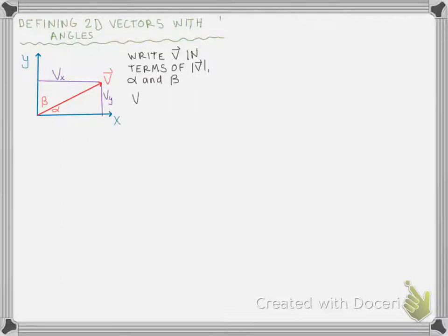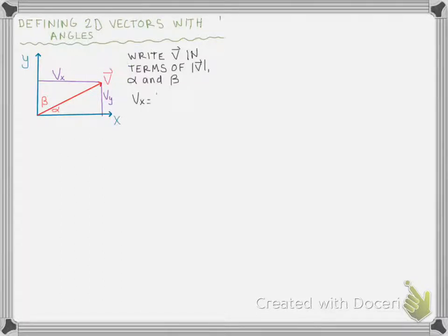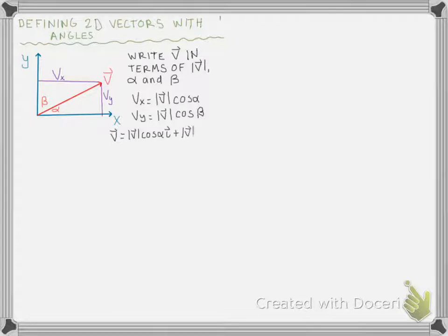What I'm going to be doing is determining vx and vy, which I've shown here in purple. So I'm going to find the magnitude of this line, its x component, and its y component. I can do that by determining vx is equal to the magnitude times the cosine of alpha, and vy is the magnitude of the vector times the cosine of beta. And I can write this in Cartesian vector form: v equals magnitude times cosine alpha times i plus magnitude times cosine beta times j.